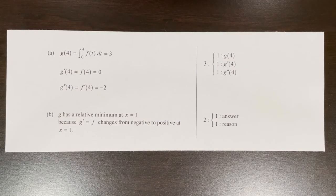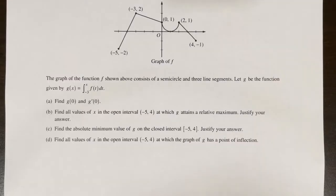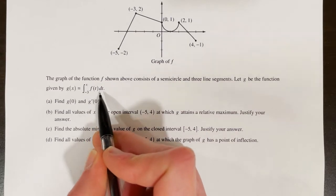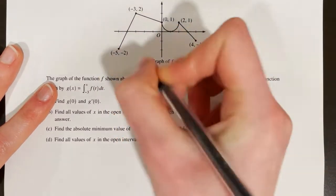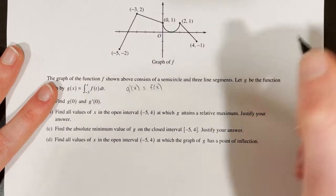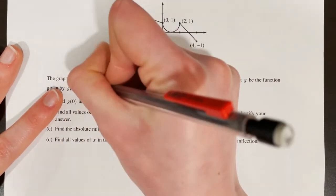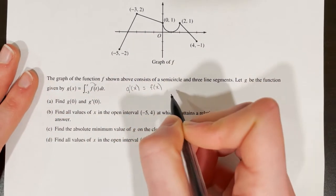Here is the answer key from the College Board, from the test archive for this problem. For the next example, the graph of f consists of a semicircle and three line segments. Let g of x equal the integral from negative 3 to x of f of t dt. Right away, by the fundamental theorem of calculus, since there is a constant on the bottom and an independent variable on top, g prime of x equals f of x.